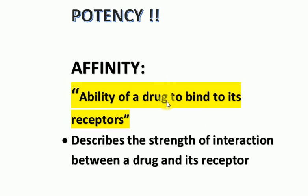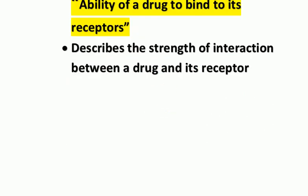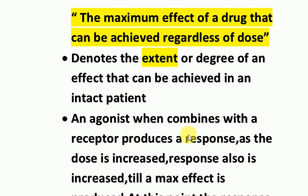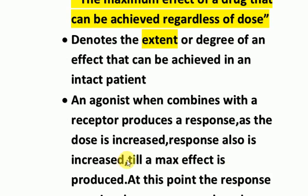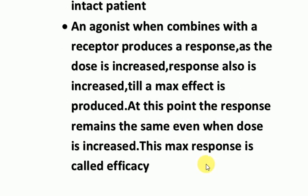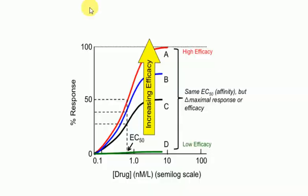Now moving towards the second term, and that is efficacy. Efficacy is the maximum effect of a drug that can be achieved regardless of dose. It denotes the extent or degree of an effect that can be achieved in an intact patient. When an agonist is combined with the receptor it produces a response; as the dose is increased, the response is also increased until a maximum effect is produced. At this point the response remains the same even when dose is increased — this maximum response is called efficacy.